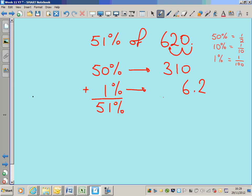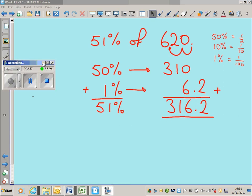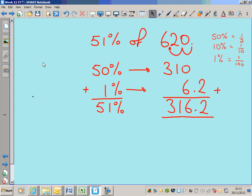I write it carefully in columns like this. And I add my two totals together, 50% and 1%. 0.2, 0 plus 6, 1, 3, there's my total, 316.2. Carrying on, that's the answer to the first question.